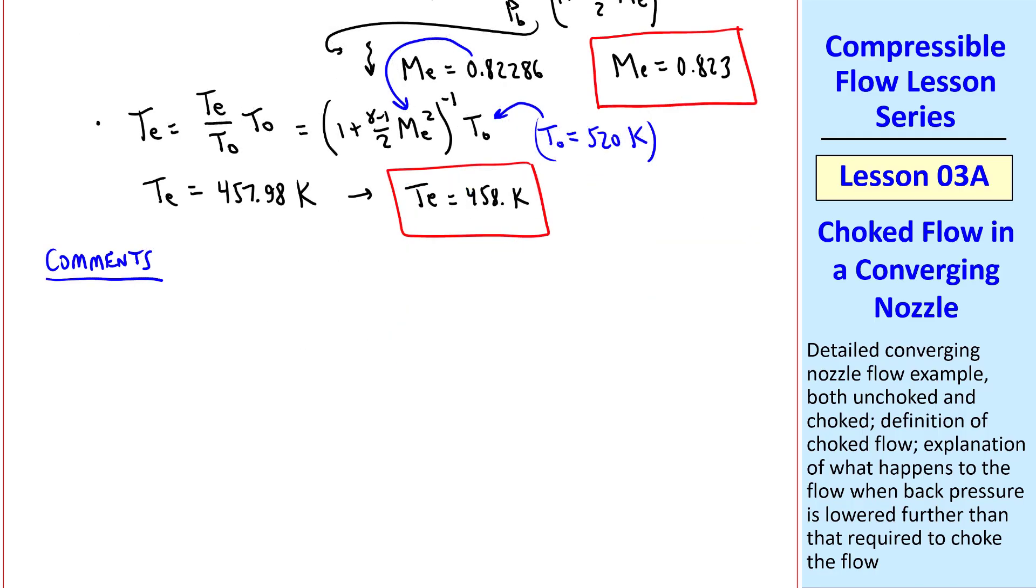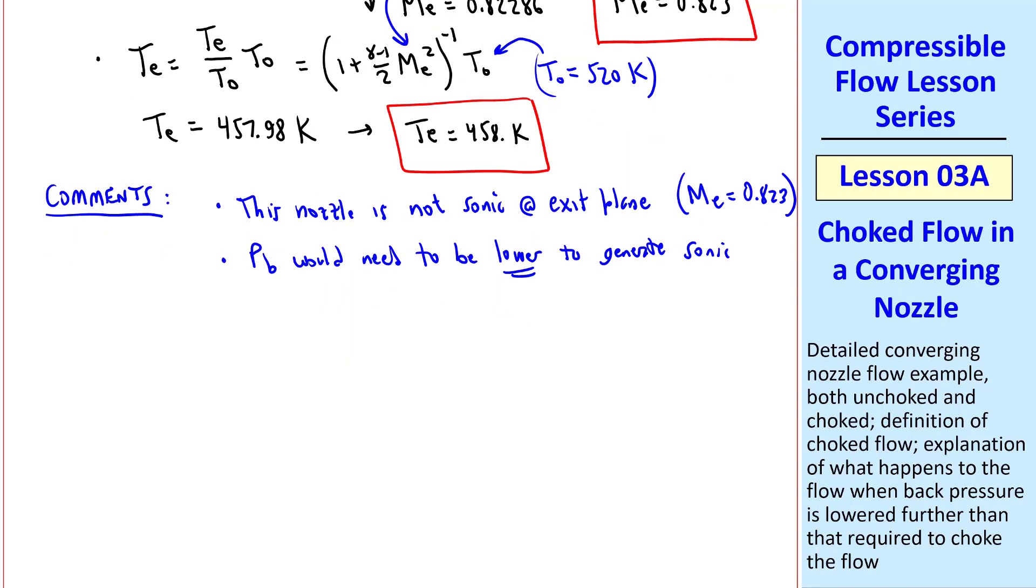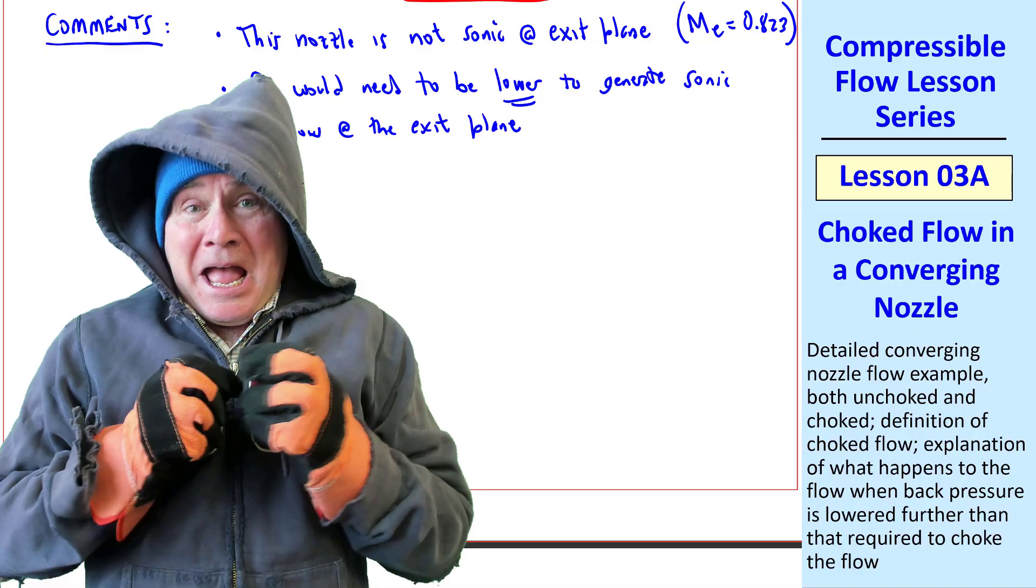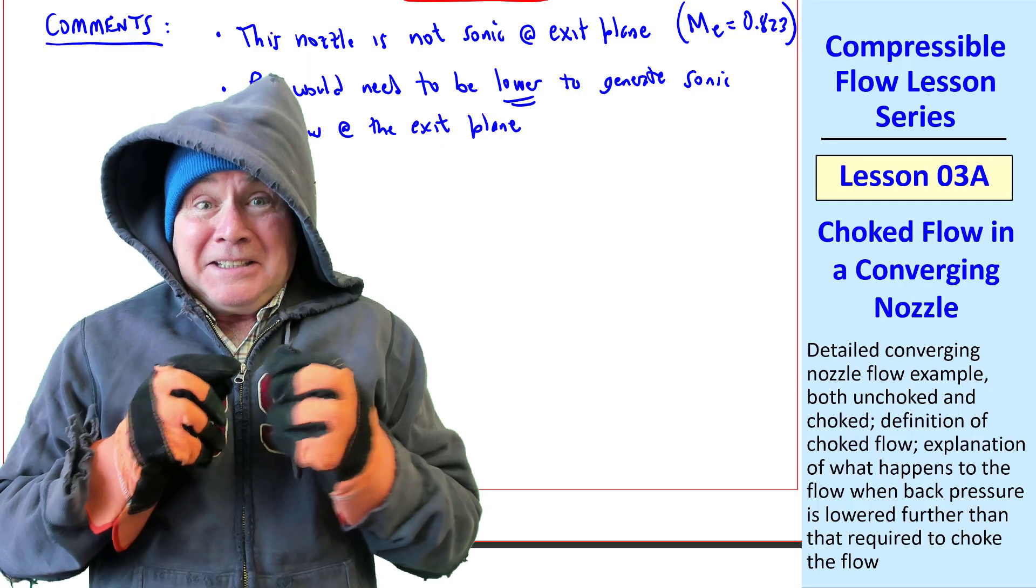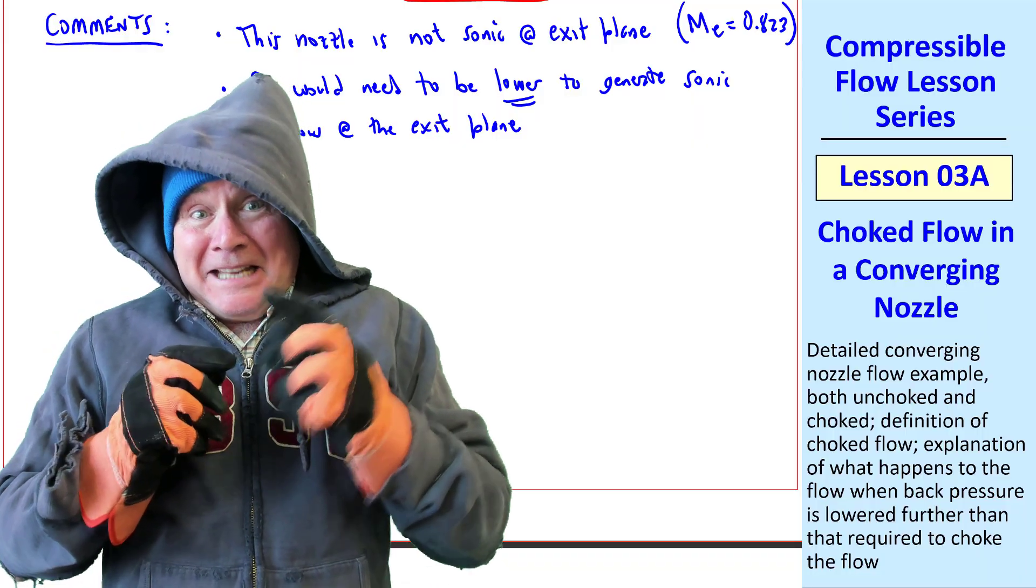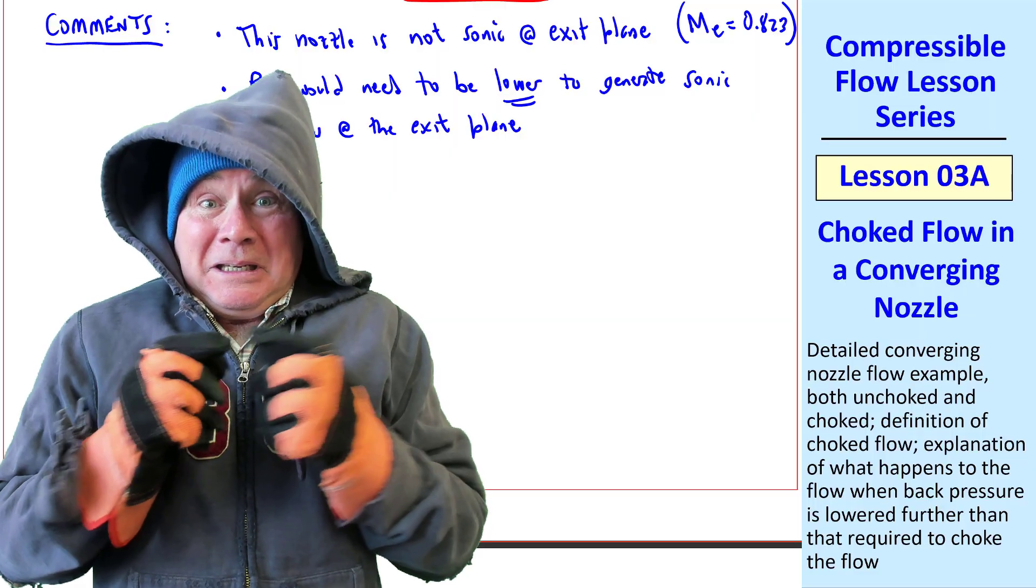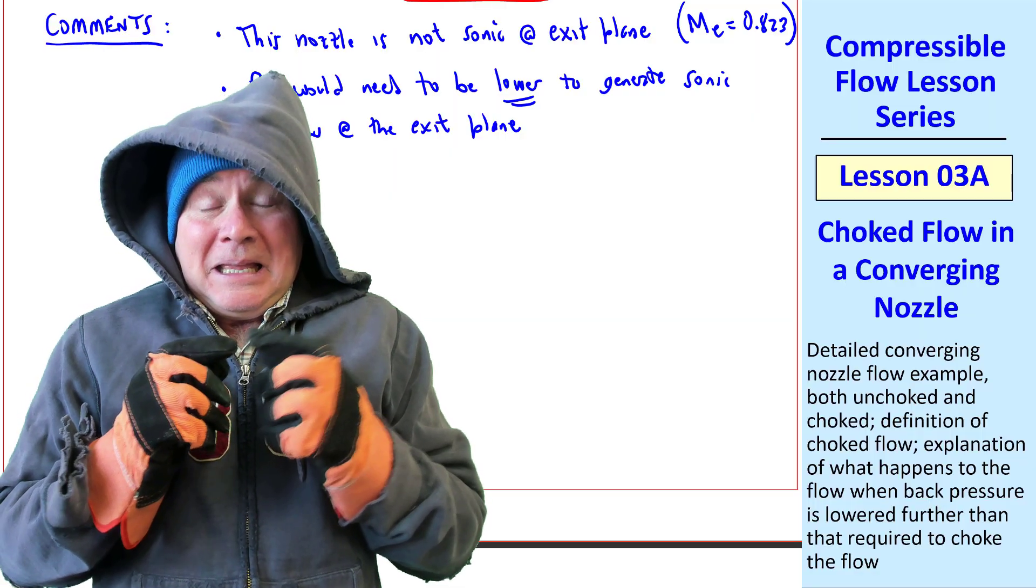Before we move on to part C, I'll make some comments. First of all, this nozzle is not sonic at the exit plane, since Me is less than 1. The back pressure would need to be lower than what was given to generate sonic flow at the exit plane. Sir, I calculated that the exit temperature is 62 degrees colder than that in the stagnation tank. Why is it so cold? Great observation, Mr. Calvin. You're correct.